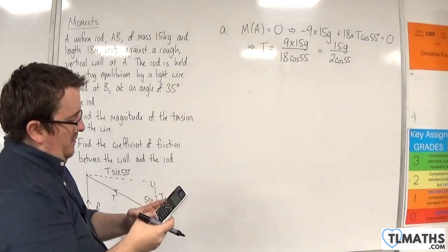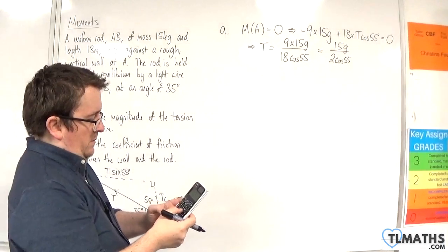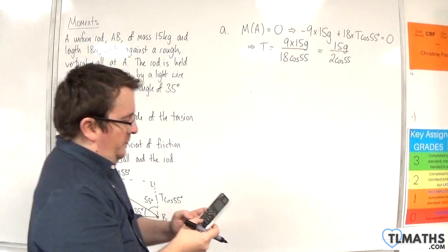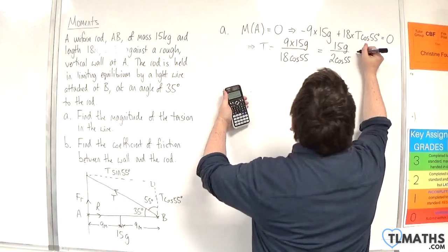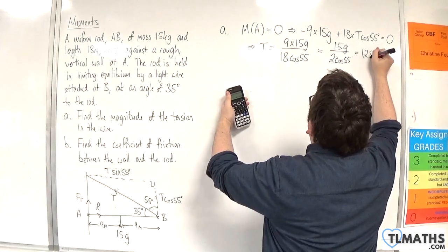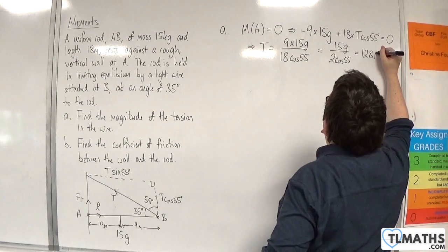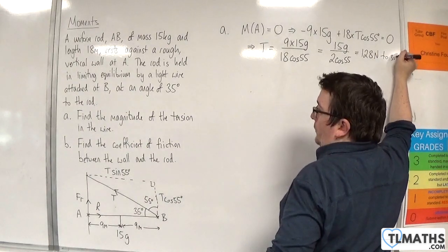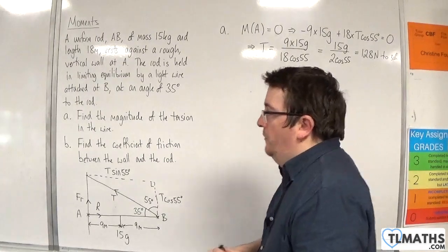I'll plug that in using g as 9.8. Let's see what we get. So 128, it's 128 newtons to three significant figures.